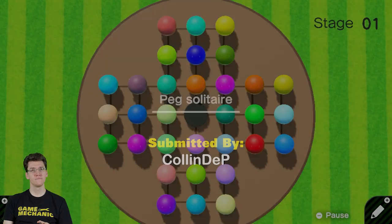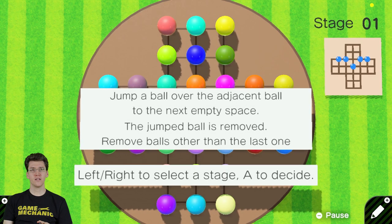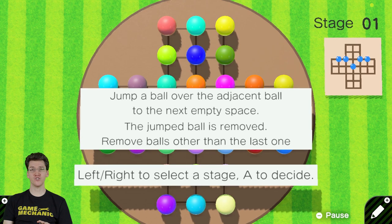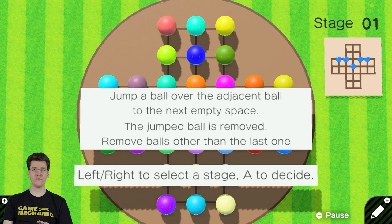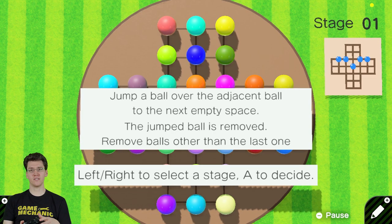Peg Solitaire. Alright, jump a ball over the adjacent ball to the next empty space. The jumped ball is removed. Remove balls other than the last one. Left, right to select a stage. A to decide.